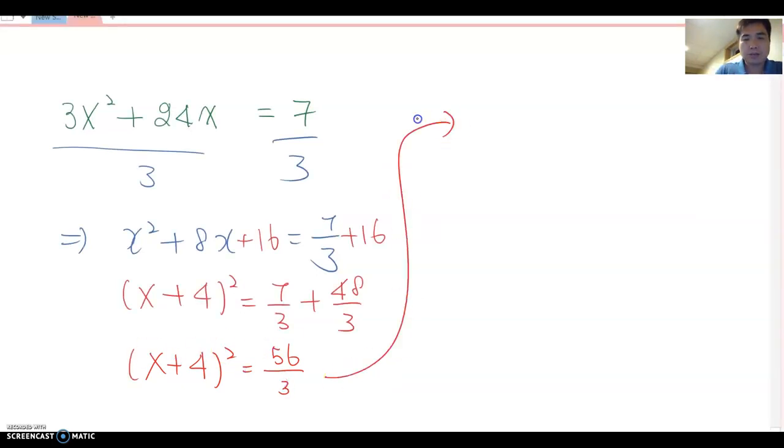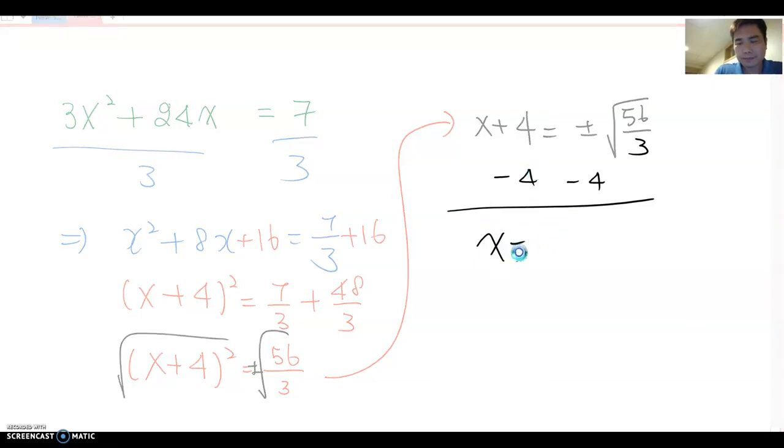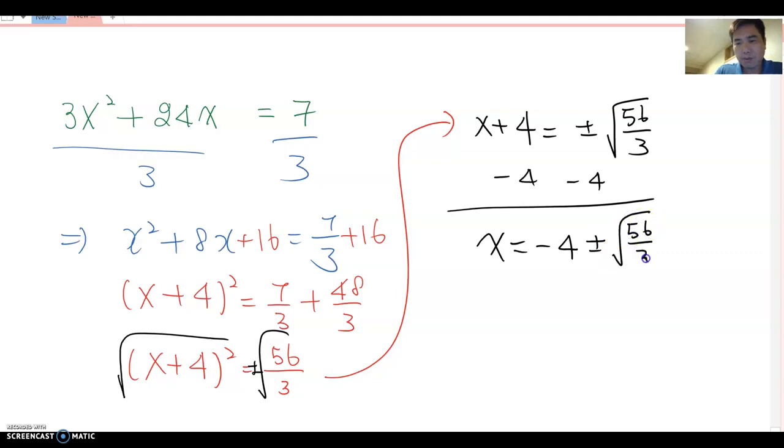Then now I continue here. Now we take square root of both sides. Don't forget plus and minus. Then this becomes x plus 4 equal to plus and minus square root 56 over 3. Now, subtract 4 on both sides. Then x equal to negative 4 plus and minus root 56 over 3. Like I told you before, we don't want to write irrational on denominator. So you can multiply root 3 on both numerator and denominator. Then x equal to negative 4 plus and minus root 168 over 3.